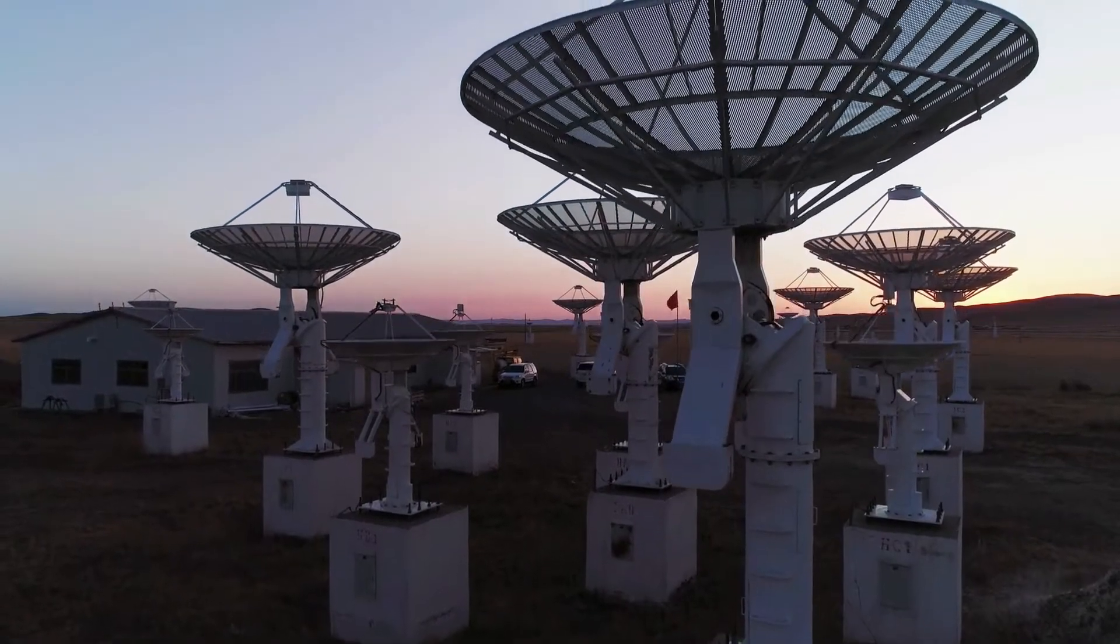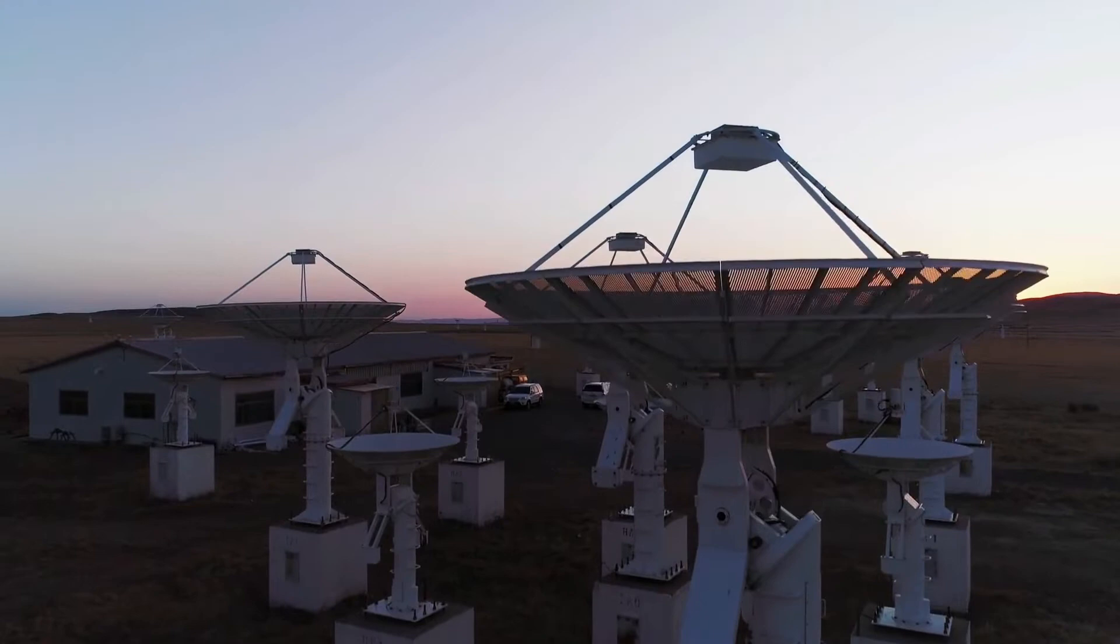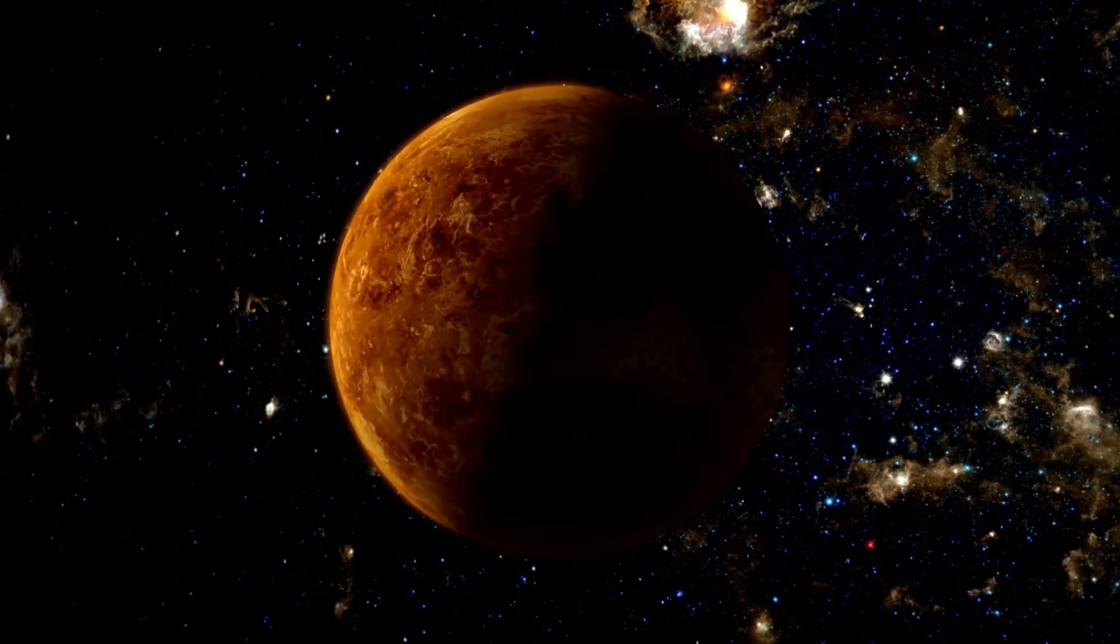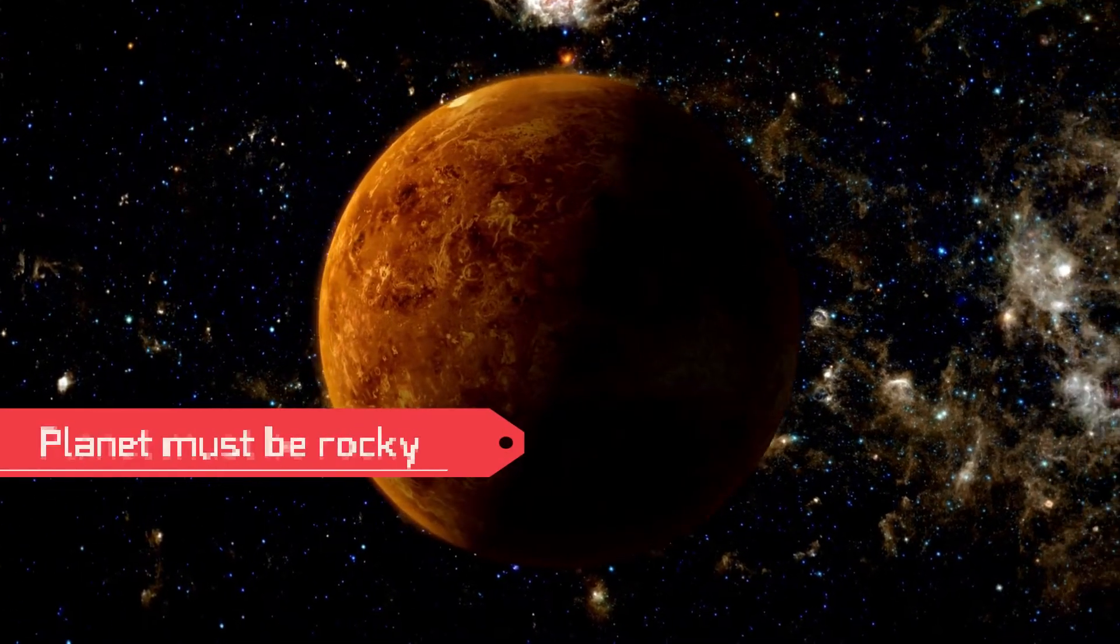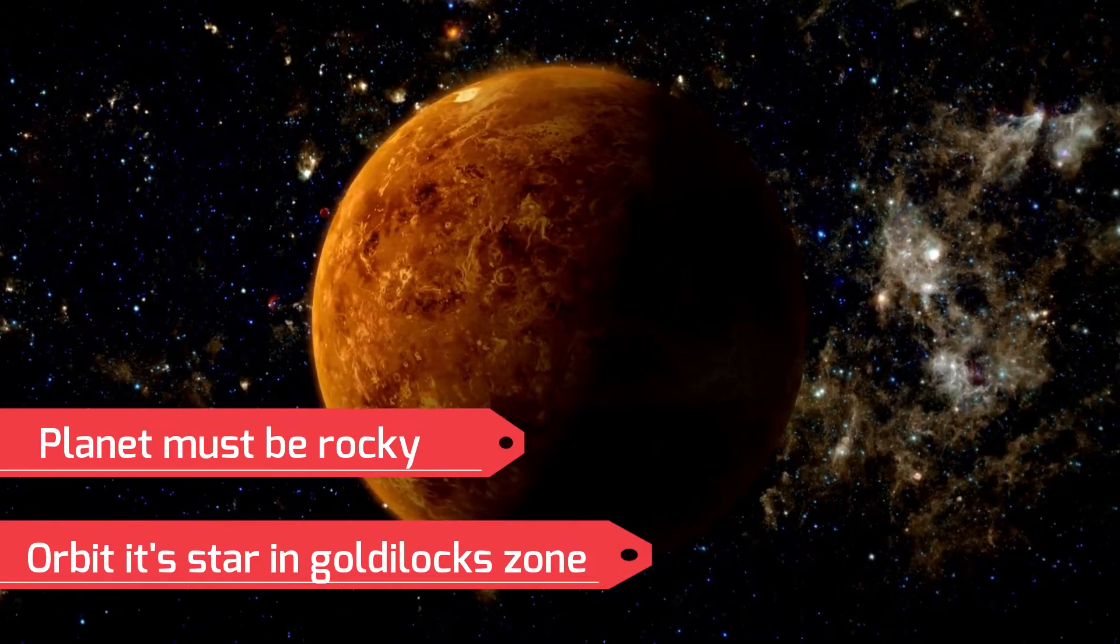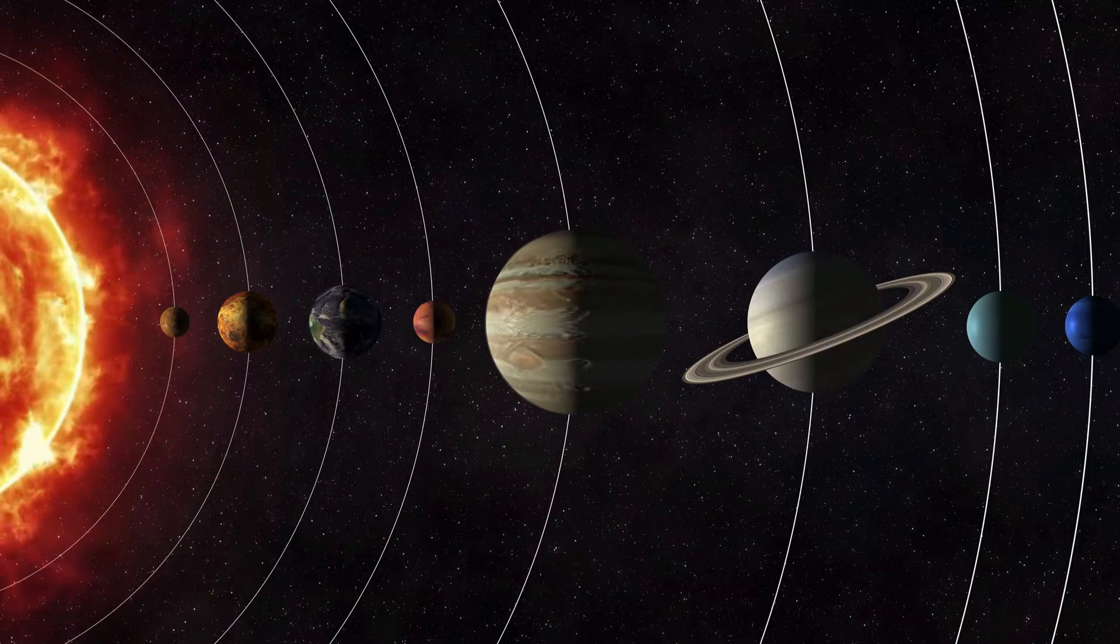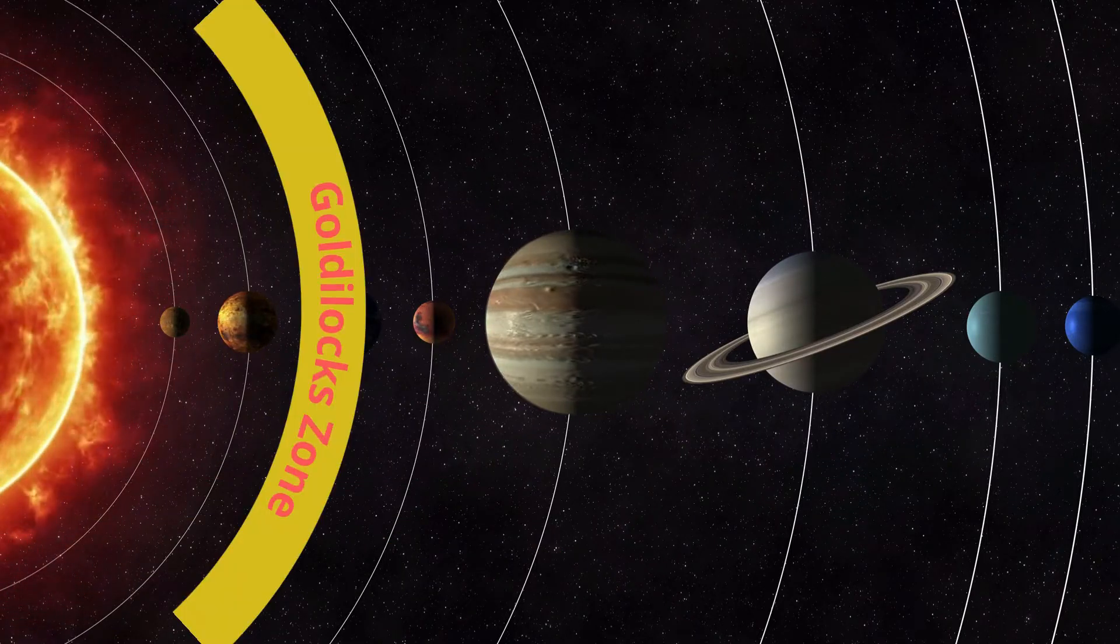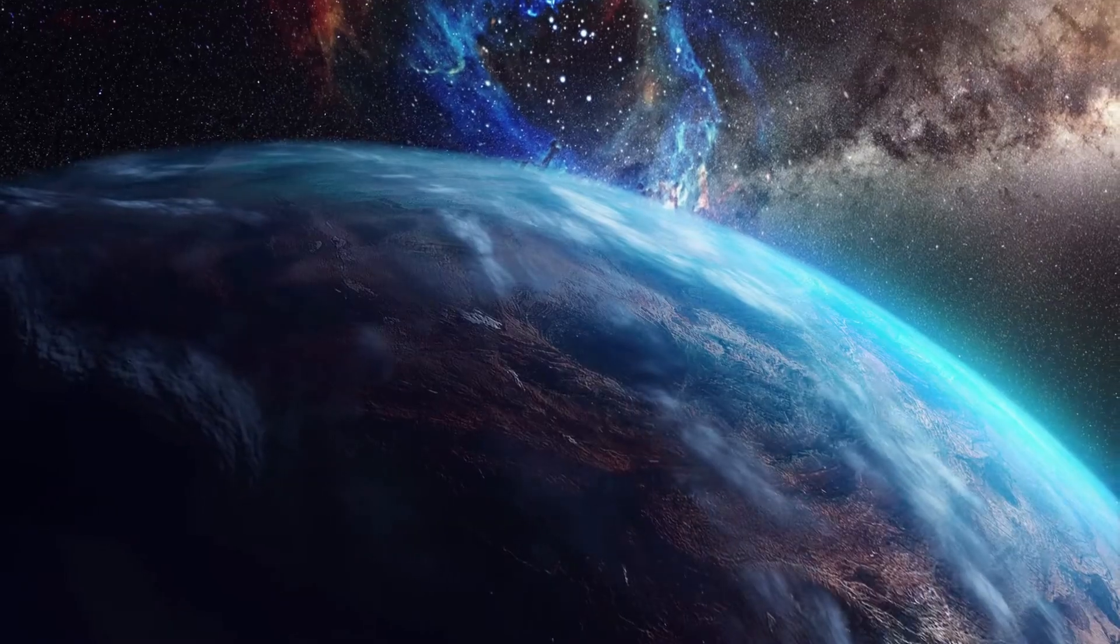For decades, scientists have been looking for planets like Earth that could host life elsewhere in our universe. There are a lot of criteria for planets to be considered as habitable. To name a few, planets must be rocky and orbit its star in a Goldilocks zone, the distance where the planet is not too close to its star for water to evaporate like Venus and not too far for water to freeze similar to Mars.